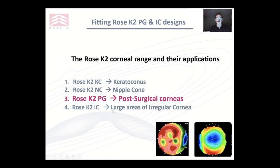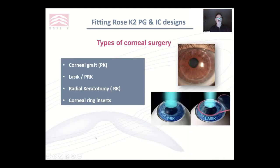Today we're going to mainly talk about post-graft and post-surgical corneas, although we will touch on a couple of other areas. The types of corneal surgery we have include grafts — full penetrating or partial penetrating — LASIK, PRK, radial keratotomy, and corneal ring inserts. Those are our four main categories that we see in corneal surgery.